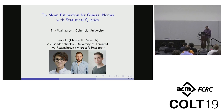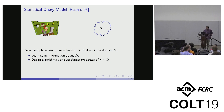Let me first set up the problem as well as the context. We'll work in the statistical query model, which was introduced by Kearns in '93. The main setup is that we have a player, and she gets sample access to some unknown distribution D on some particular domain, and we want to learn some information about the distribution.